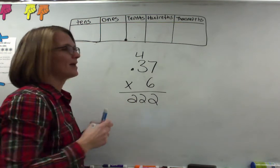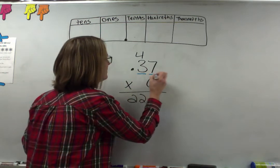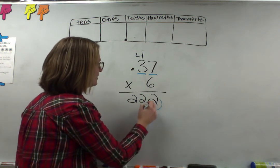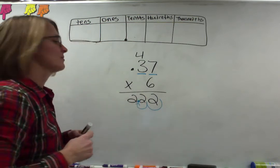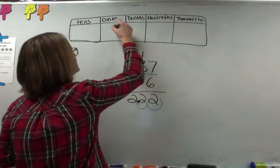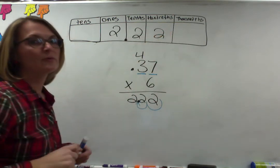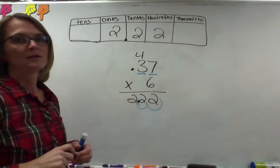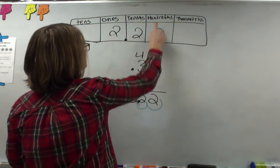Now that we have our answer we look at the problem and say I have two numbers after the decimal in this problem. So I need to move in two places from the end of the answer and put a decimal. So my answer is going to be 2 on this side of the decimal and 2, 2 on that side of the decimal. So I would read it 2 and 22 hundredths. The other way you could read it is 222 hundredths, but that's another story maybe for another day.